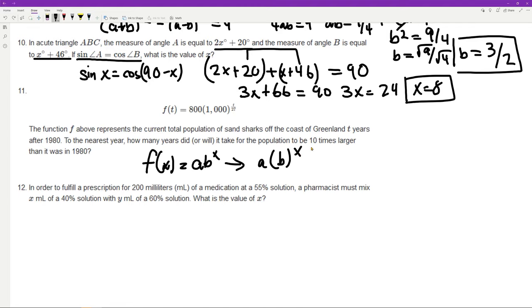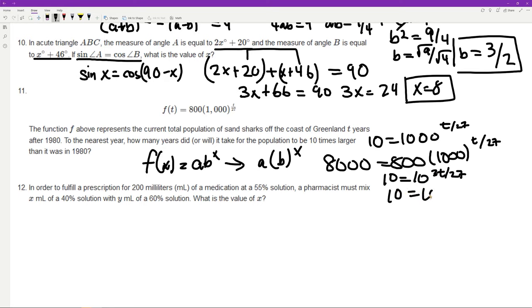So in order for the population to be 10 times larger, what we need to do is set this entire function equal to 8000, just because 800 is the initial value, so we just multiply by 10. So 8000 = 800·(1.1)^(t/27). So now let's divide that, and then we get 10 = (1.1)^(t/27). And then we also rewrite 1.1 as 10^(1/10), so let's just do that. 10 = (10^(1/10))^(t/27). And now we just simplify this fraction. 10 = 10^(t/270). And what value of t is going to give us 10? That's just going to be 270... wait, t/9. So t = 9, and that's going to be our final answer.